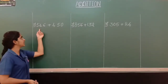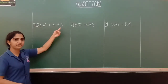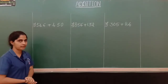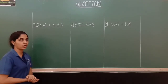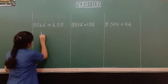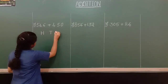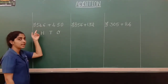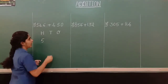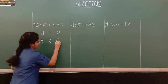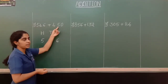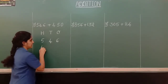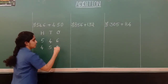The first problem we have is 546 plus 450. We have to add these two numbers and find out the sum. The first step is writing the numbers in vertical order according to their places — 100's place, 10's place, and 1's place. For 546, 5 is in 100's place, 4 is in 10's place, and 6 is in 1's place. For 450, 4 is in 100's place, 5 in 10's place, and 0 in 1's place.